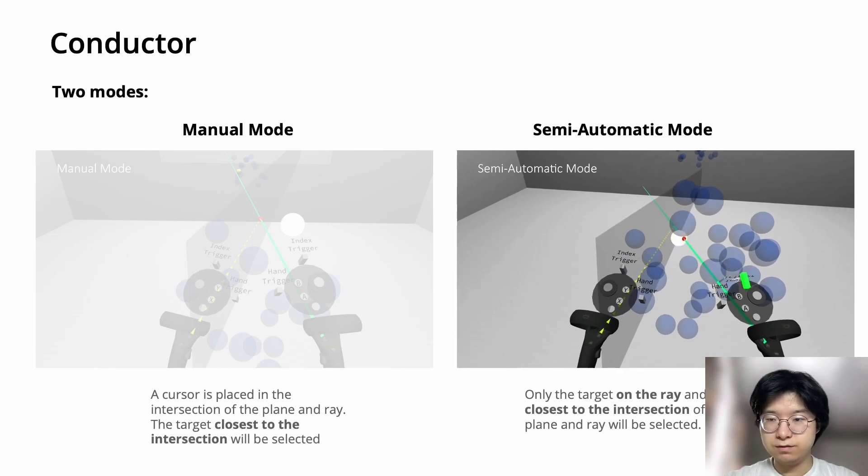We can tell from the video that the depth specification using the non-dominant hand can be done together with dominant hand pointing, which is time-saving and intuitive, since you just need to point to the approximate place of the target.